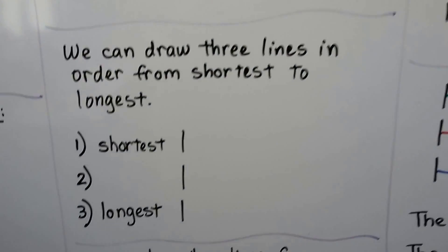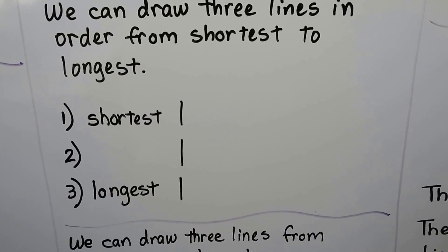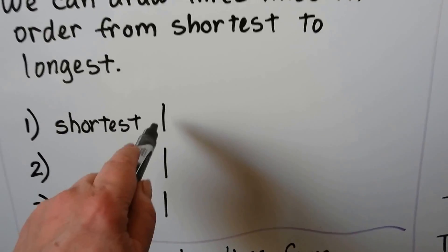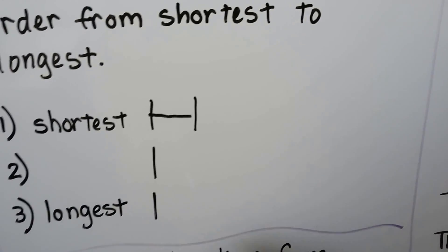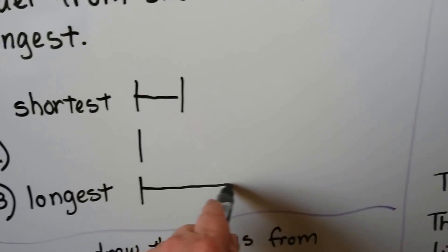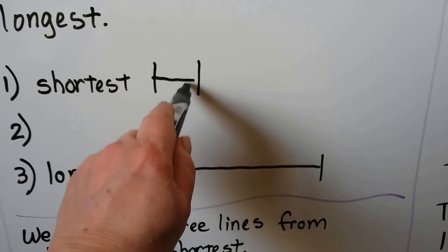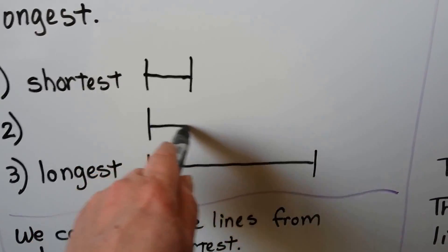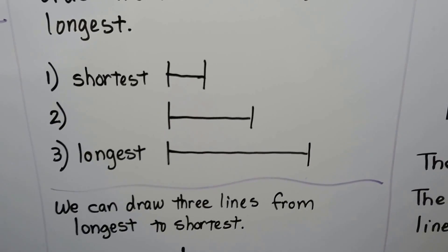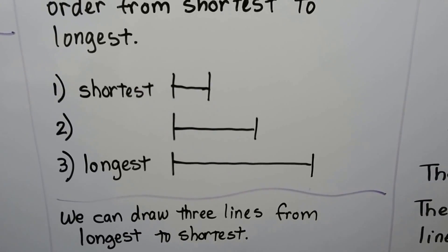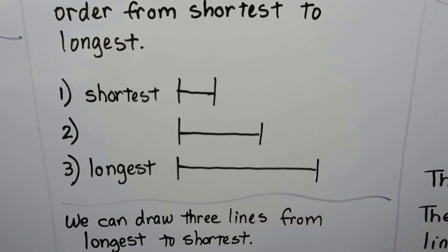We can draw three lines in order from shortest to longest. The shortest line would be very small, the longest line would be much bigger, and the line in between them would be in the middle — a middle length. These are in order from shortest to longest.